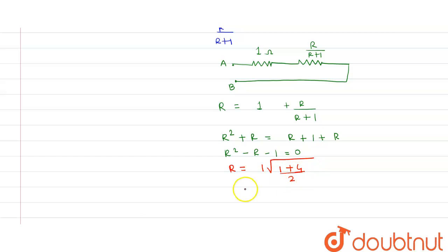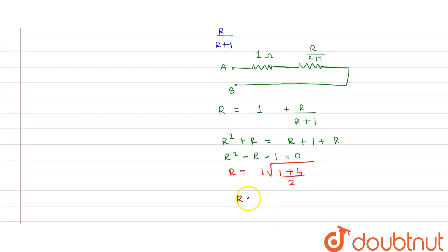So we get this, R equal to 1, this is plus minus under root of 5 upon 2.